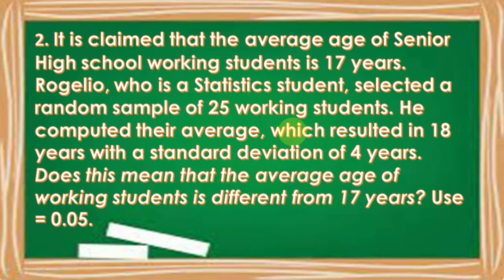Let's have the second problem. It is claimed that the average age of senior high school working students is 17 years. Rujelio, who is a statistics student, selected a random sample of 25 working students and computed their average, which resulted in 18 years with a standard deviation of 4 years. Does this mean that the average age of working students is different from 17 years? Use an alpha level of 0.05.